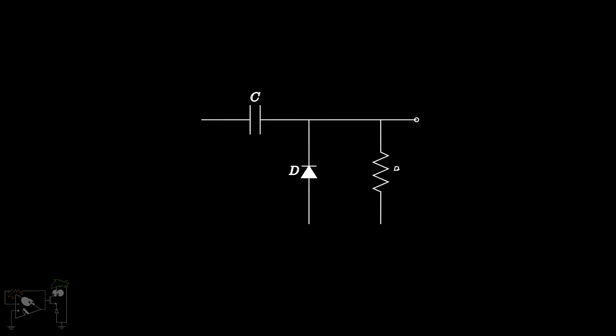The basic passive clamper circuit is constructed using a capacitor and diode in series, where the output is taken from the diode. There are two types of clampers: positive and negative.